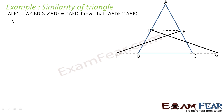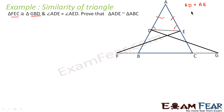The question says triangle FEC is congruent to triangle GBD. Also, angle ADE is equal to angle AED — that is, these sides are equal, so AD is equal to AE. We have to prove that triangle ADE is similar to triangle ABC.